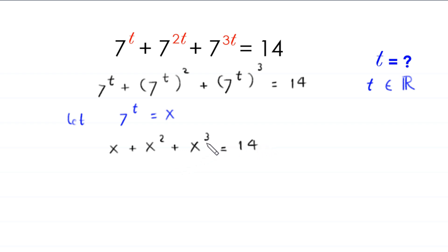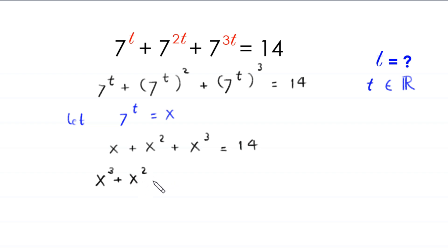Rearranging these terms and moving 14 to the left-hand side, this will become x cubed plus x squared plus x minus 14 is equal to 0.